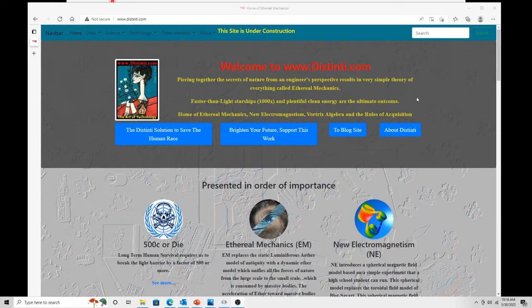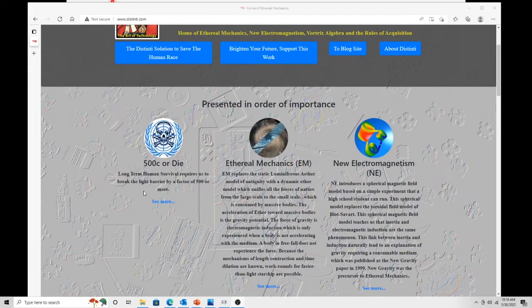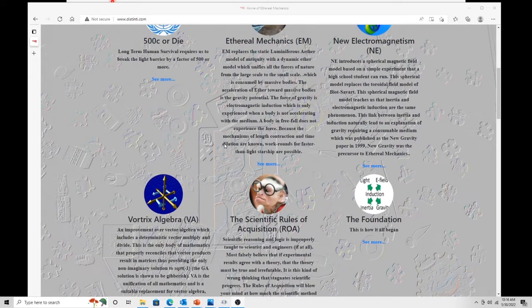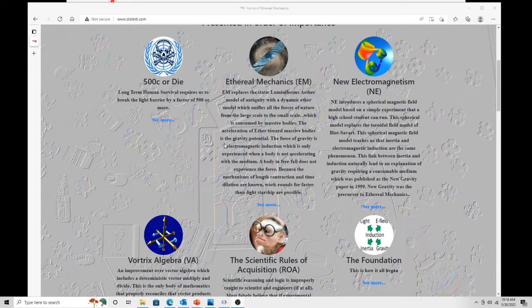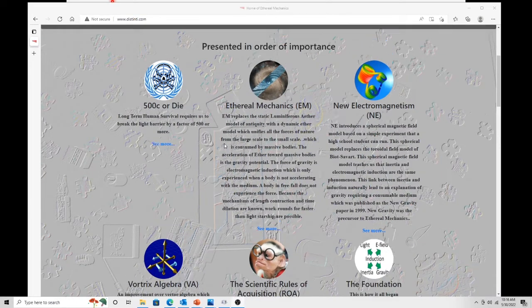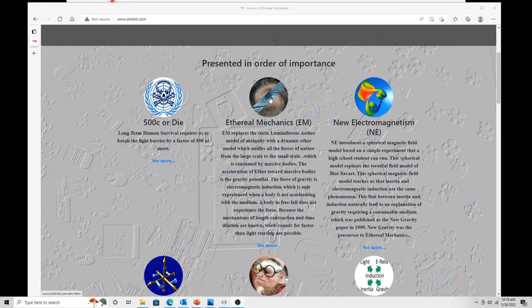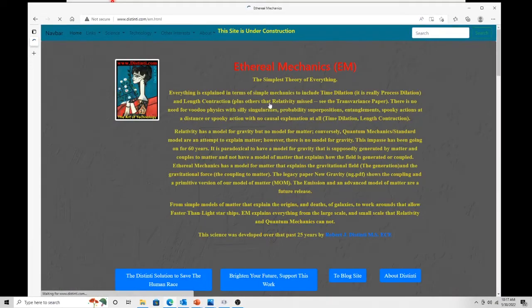This is the homepage for Ethereal Mechanics, which is distinti.com. And over here is the video series 500 see or die, which basically shows we need to break the light barrier by at least a factor of 500 or we're going to go extinct. So you can go watch it. This links to a YouTube video. There's a lot of other things on this page, but we're going to talk about them differently because they're also linkable from this page. This is the main Ethereal Mechanics page. The link here or the link here will get you into the Ethereal Mechanics page.